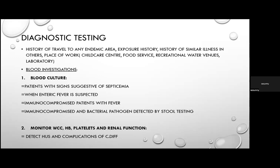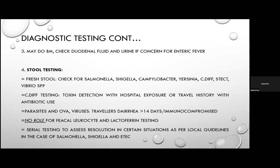Monitor white cell count, haemoglobin, platelets, and renal function to detect complications such as haemolytic uraemic syndrome in STEC infection and complications of C. difficile. Bone marrow culture, duodenal fluid, and urine can be checked for enteric fever, as blood culture yield is only about 50%. Fresh stool testing is recommended to check for Salmonella, Shigella, Campylobacter, Yersinia, C. difficile, Shiga toxin-producing E. coli, and Vibrio species.